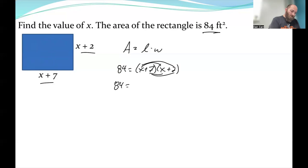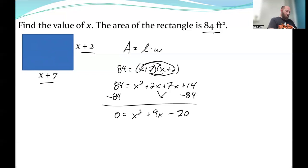It's sort of already in factored form, so what I want to do here is distribute. So I'll have 84 = x² + 2x + 7x + 14. We're going to combine these two together as well as subtract 84 to both sides. So that's x² + 9x minus 70. Am I doing that right? 14 minus 84? Yeah.